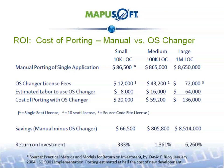For example, using OS Changer on a porting project for a medium-sized application around 100,000 lines of code will save over $805,000.